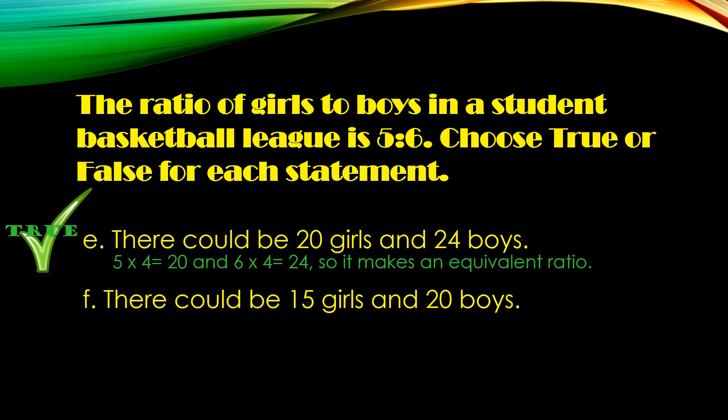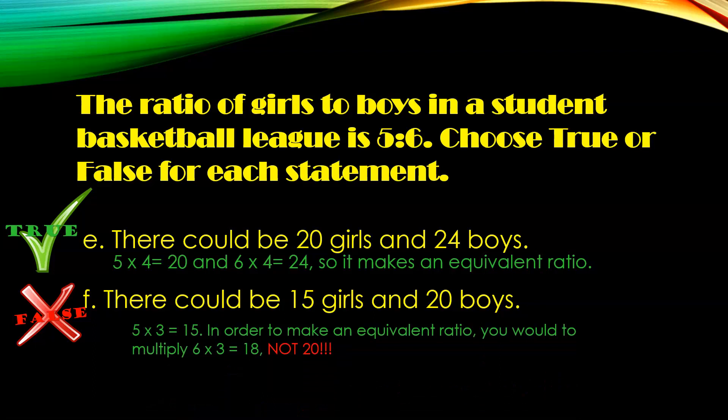Statement F: there could be 15 girls and 20 boys. Comparing 5 over 6 to 15 over 20 — in order to get from 5 to 15, I would need to multiply by 3. This is false, because 5 times 3 equals 15, but in order to make an equivalent ratio, you would need to multiply 6 times 3 and get 18, not 20.